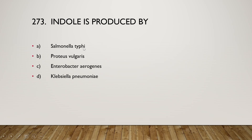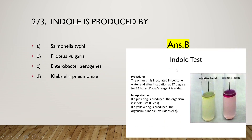Indole is produced by Salmonella typhi, Proteus vulgaris, Enterobacter aerogenes, or Klebsiella pneumoniae? The right answer is option B, Proteus vulgaris. In the indole test, the organism is inoculated in peptone water and incubated at 37°C for 24 hours, then Kovac's reagent is added. A pink ring indicates indole positive (e.g., E. coli); a yellow ring indicates indole negative (e.g., Klebsiella).